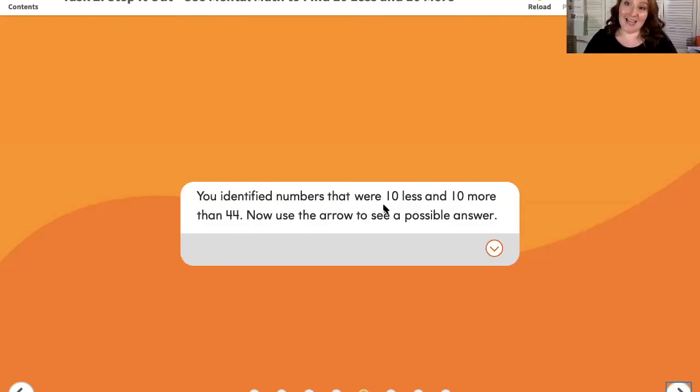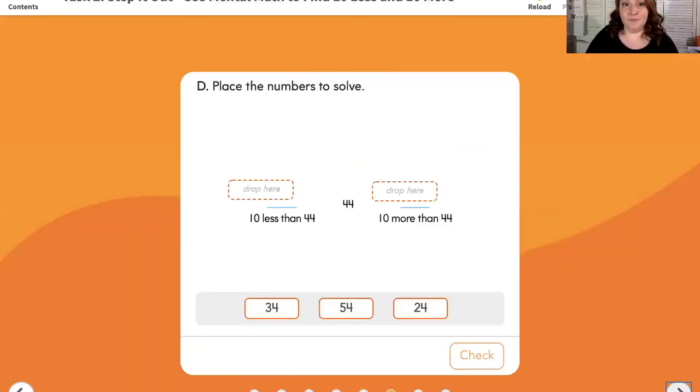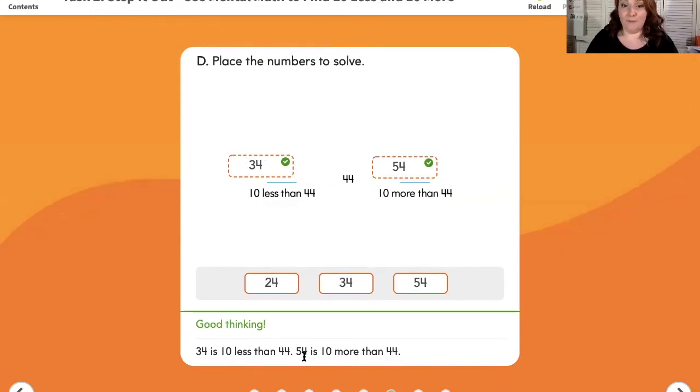You identified numbers that were 10 less and 10 more than 44. Now use the arrow to see a possible answer. They circled number 44. They jumped one spot up, which gave them 34 and jumped one spot down, which gave them 54. Place the numbers to solve. 10 less than 44, we figured out was 34 and 10 more than 44, we figured out was 54. 34 is 10 less than 44. 54 is 10 more than 44.